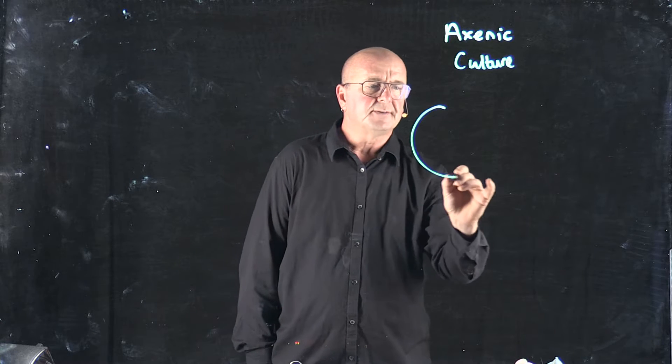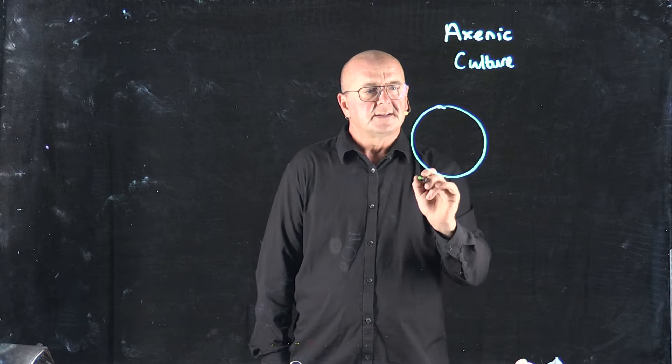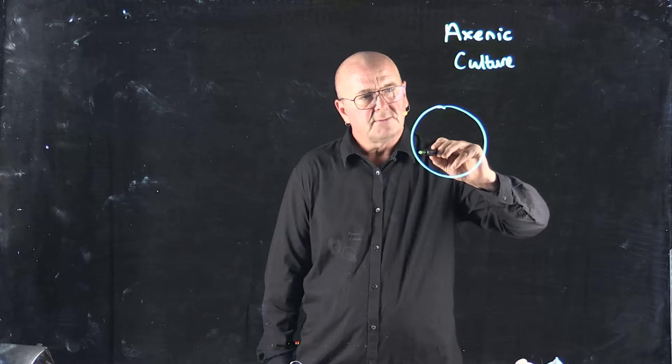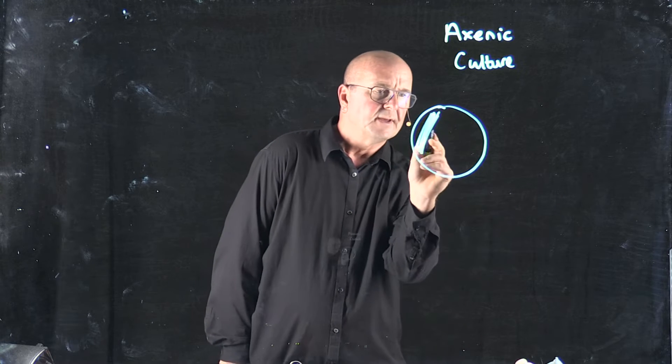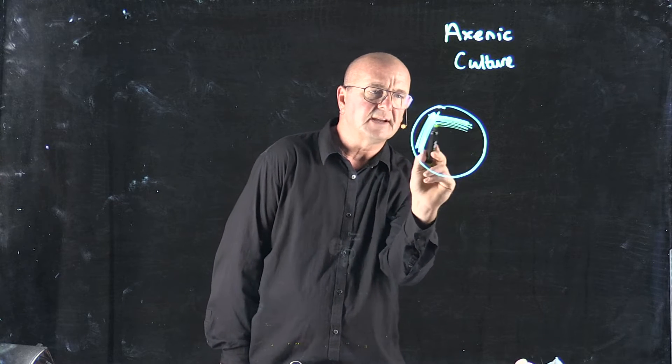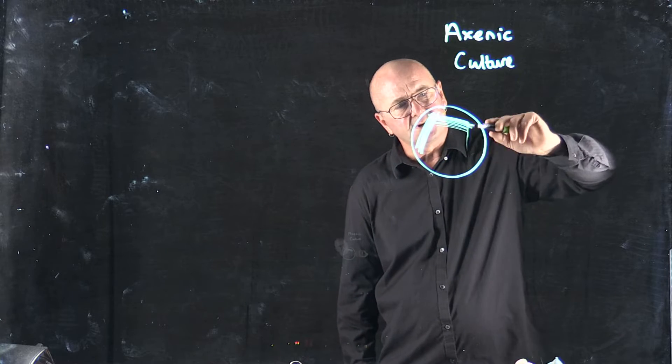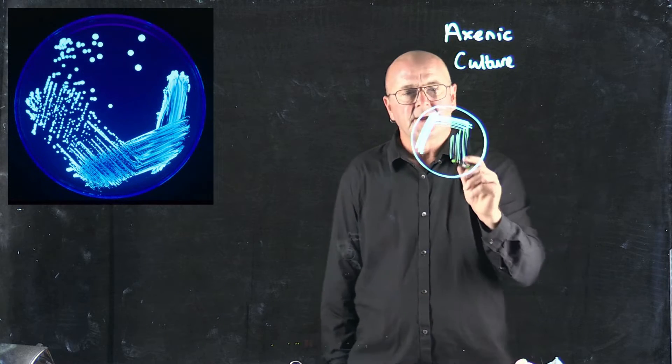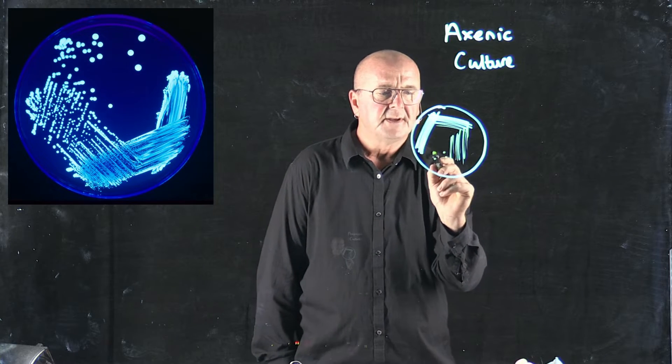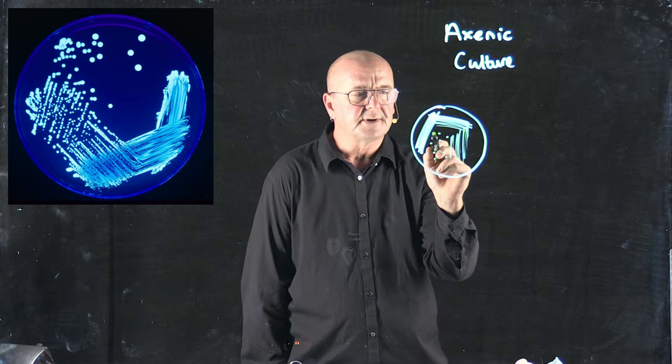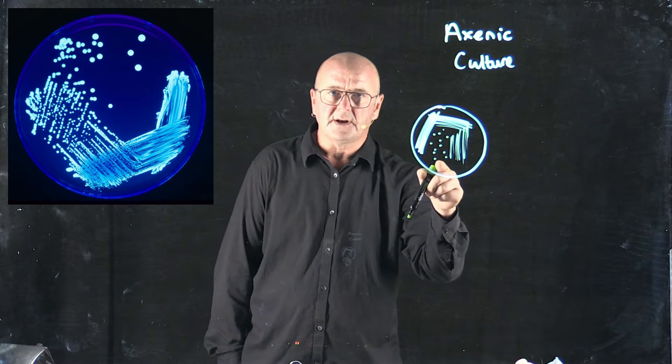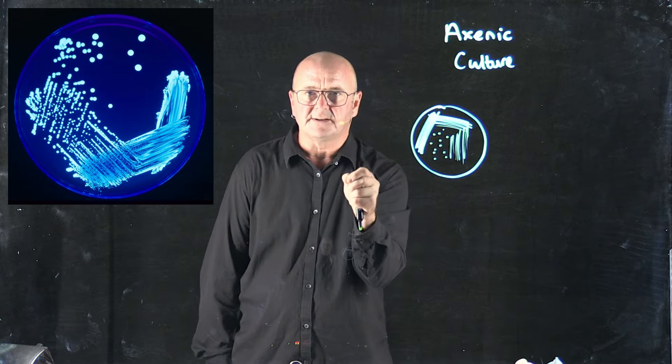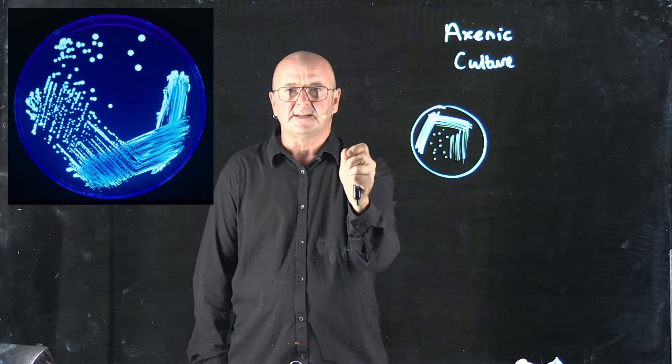Usually the way that we do this is by taking the bacteria and we streak them on a streak plate so we have a lot of growth, and then we streak across multiple times with progressively less growth so that we get down to individual colonies. The argument is that the individual colonies all arise from a single bacteria and it's a pure axenic culture.